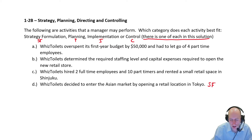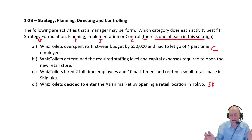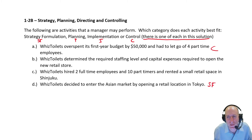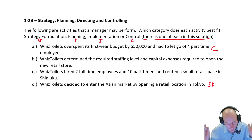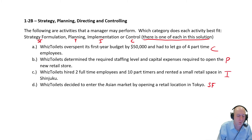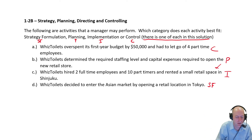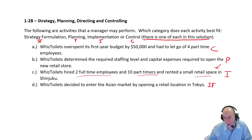So to confirm: A is control — Wiz Toilets overspent its first-year budget by $50,000 and let go of four people. They made a plan and are looking back to see how well they followed it. B is planning — they determined staffing levels and capital expenses, making a plan. And C is implementation — they staffed up and rented retail space, implementing the plan.